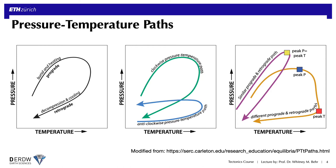Focusing first on the diagram on the left for relatively simple pressure-temperature paths, we refer to the burial and heating phases of metamorphism as prograde, and the decompression and cooling phases of metamorphism as retrograde. Many PT paths are clockwise, but they don't necessarily have to be, and some are counterclockwise, as shown by the blue curve in the center diagram. It's also good to keep in mind that some pressure-temperature paths reach their peak pressure and peak temperatures at the same point.